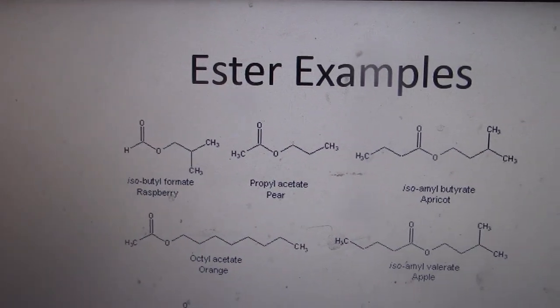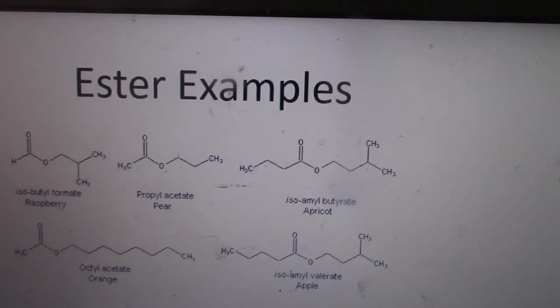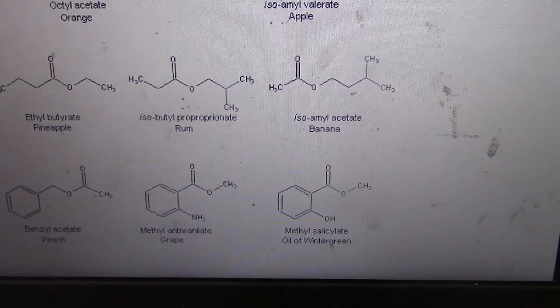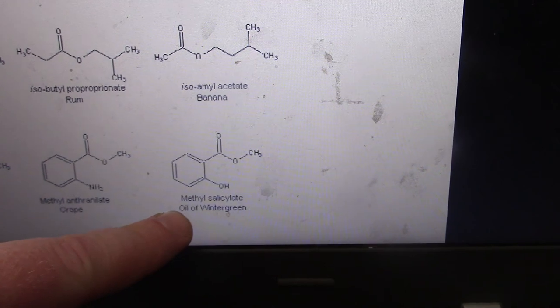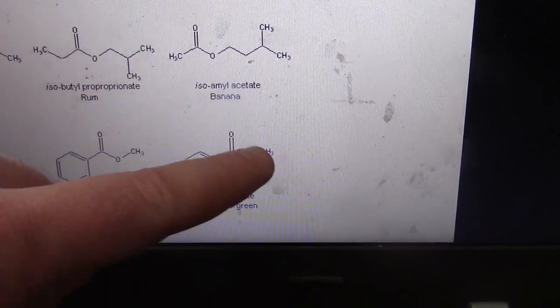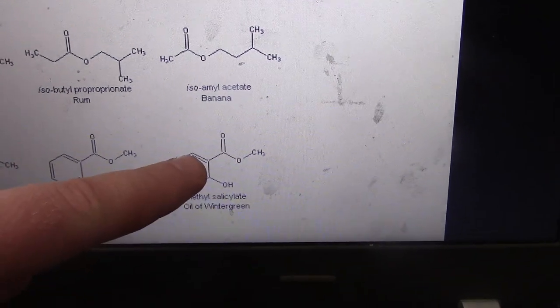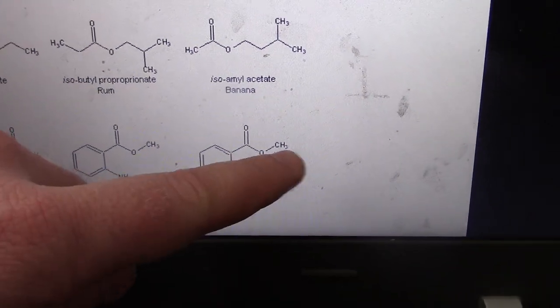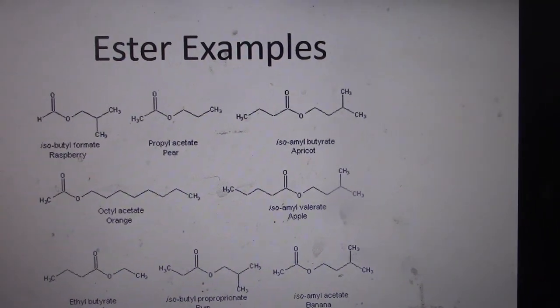Here are some ester examples — different molecules that correspond to different flavors, which we can isolate from fruits or sugary molecules. For example, wintergreen flavor is methyl salicylate, which has an alcohol portion and a carboxylic acid portion. Salicylic acid is used in a lot of acne medication, and the alcohol portion is methanol.